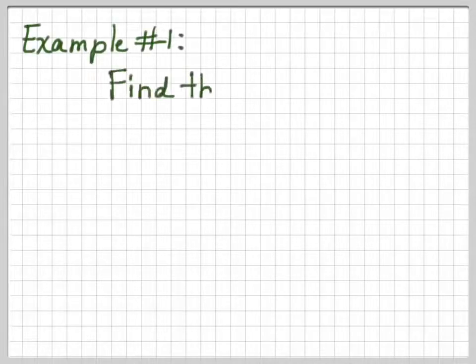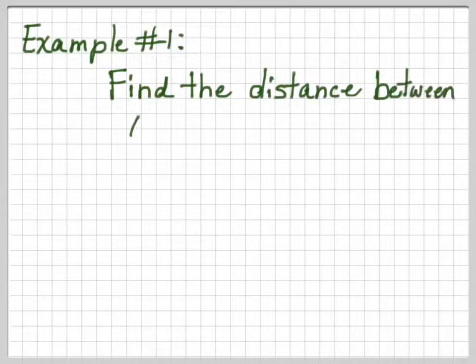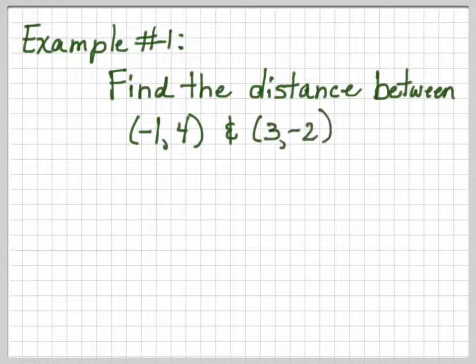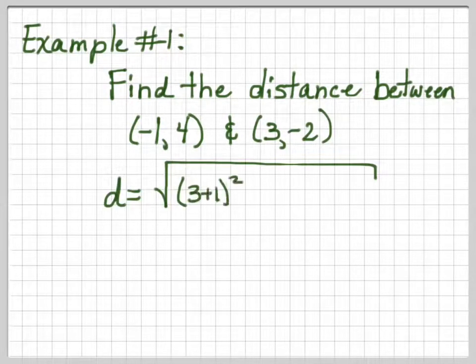Now let's do an example. Find the distance between negative 1, 4 and 3, negative 2. Okay? So it's going to be the difference of the x coordinates. And 3 minus negative 1 would make it 3 plus 1.